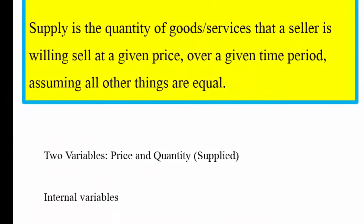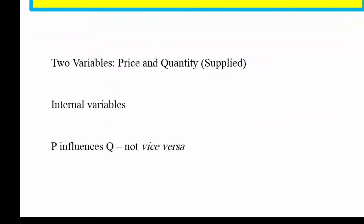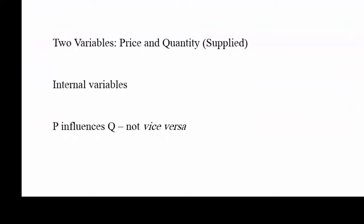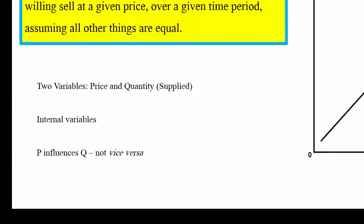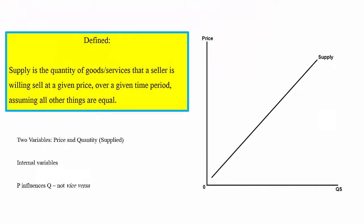As we have said already there are two variables that form the supply curve: price and quantity supplied. These are called internal variables and as with demand, remember that price influences the quantity and not the other way around. The law of supply is where price is influencing quantity and not quantity influencing price.